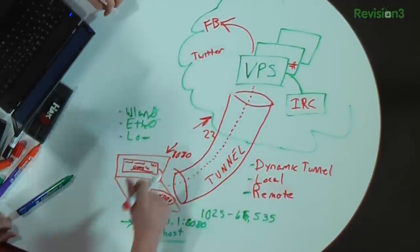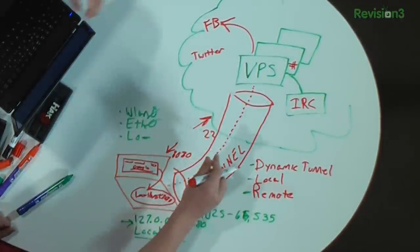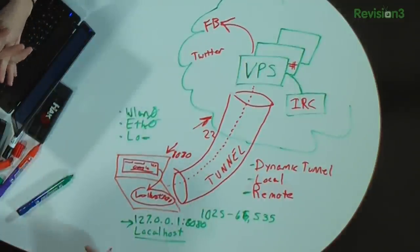What you're doing is making a relationship between the local port 8080 and the remote VPS. You could have multiple SSH tunnels to various servers around the world, and switch between them or have a specific one to go to a specific site.